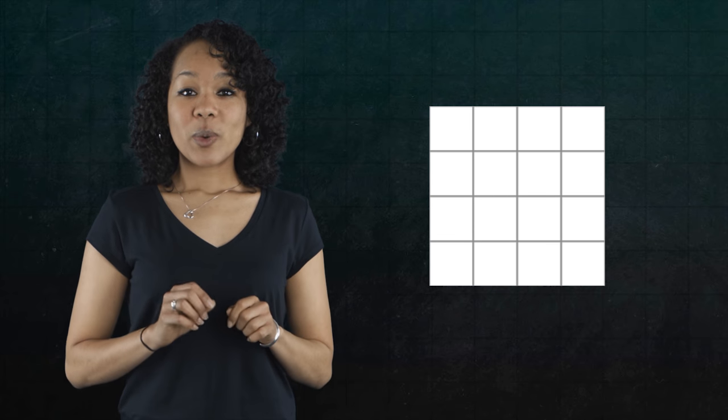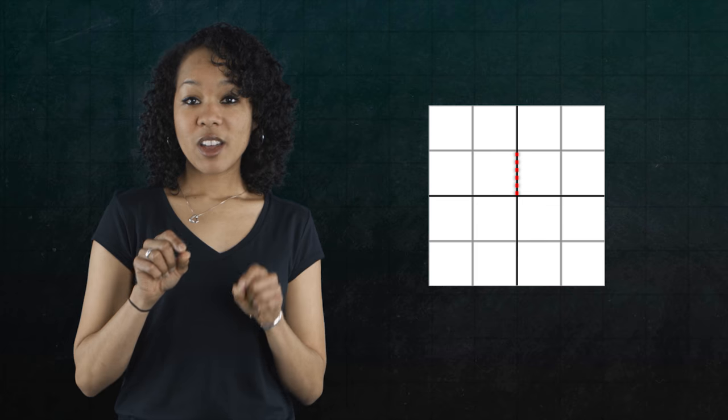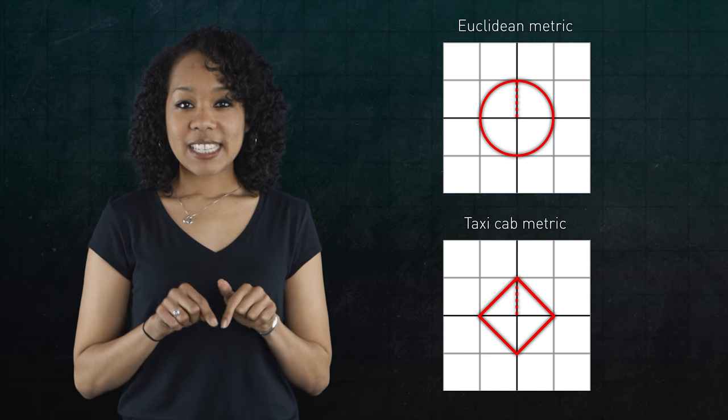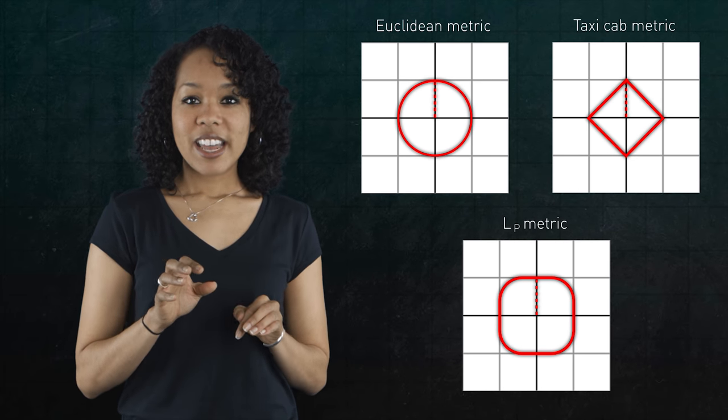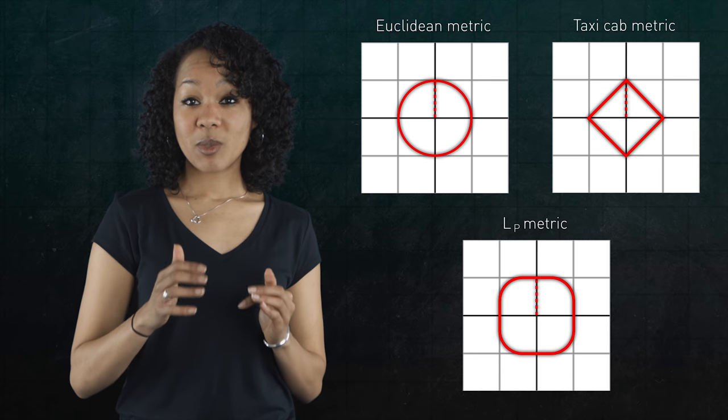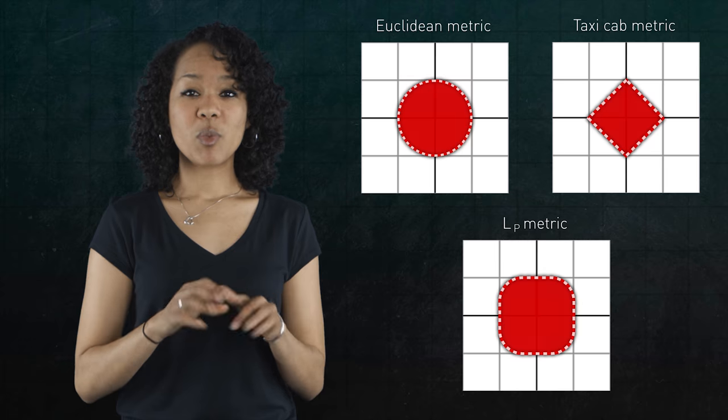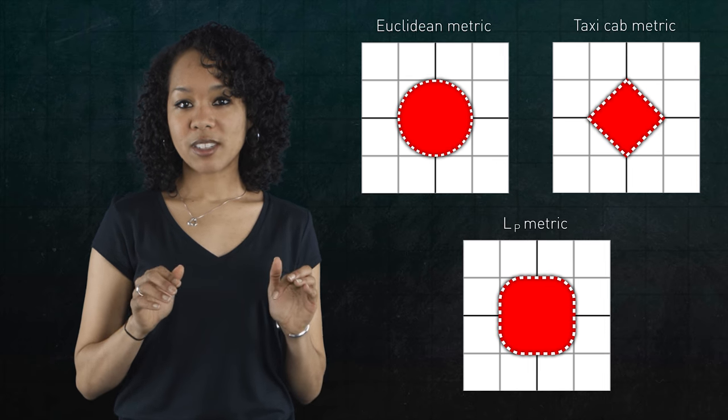In the episode, When Pi is Not 3.14, we saw that the set of all points at a distance 1 from the origin forms a circle in the Euclidean metric, a diamond in the taxicab metric, and square-type shapes in the LP metrics. And if we consider points whose distance is less than but not equal to 1, we get a circle, diamond, and square that are filled in without their boundaries. These shapes are called open because they don't include the boundary points.